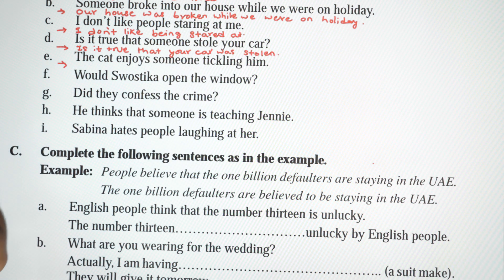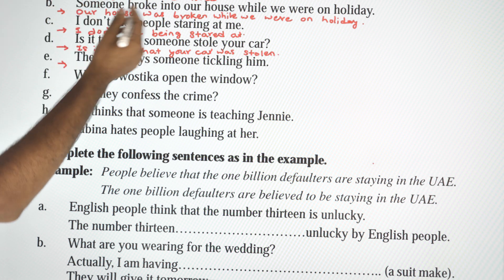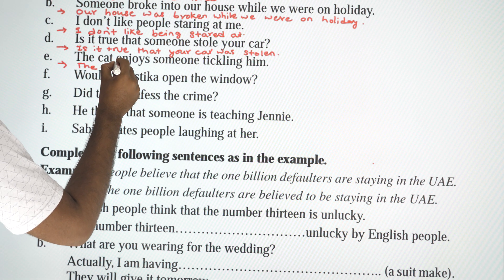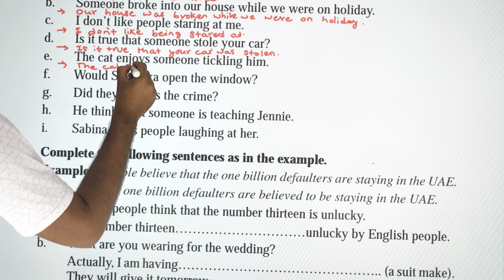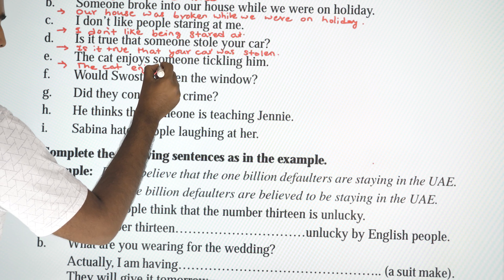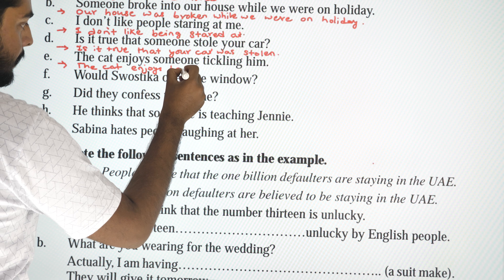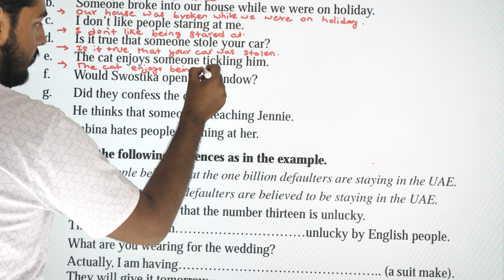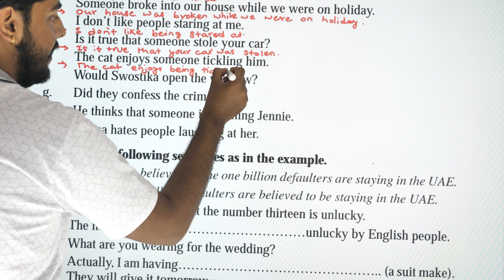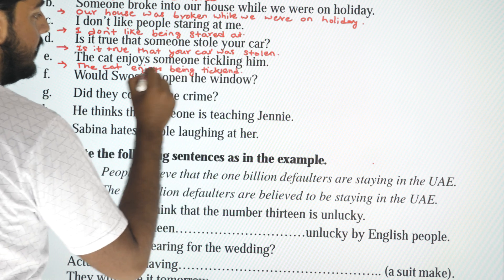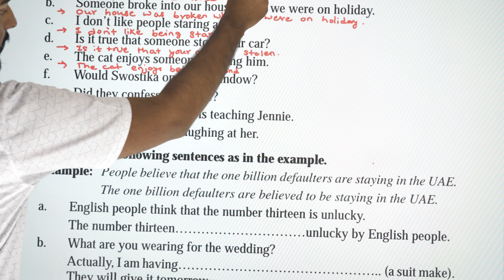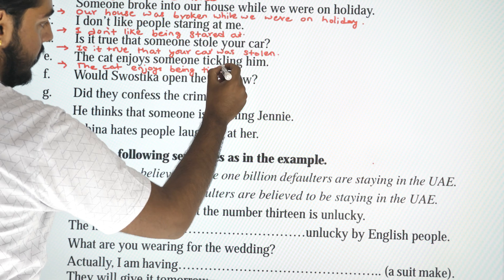Next: 'The cat enjoys someone tickling him.' Passive using the gerund rule — being plus verb 3: 'The cat enjoys being tickled.' T-I-C-K-L-E-D, tickled.